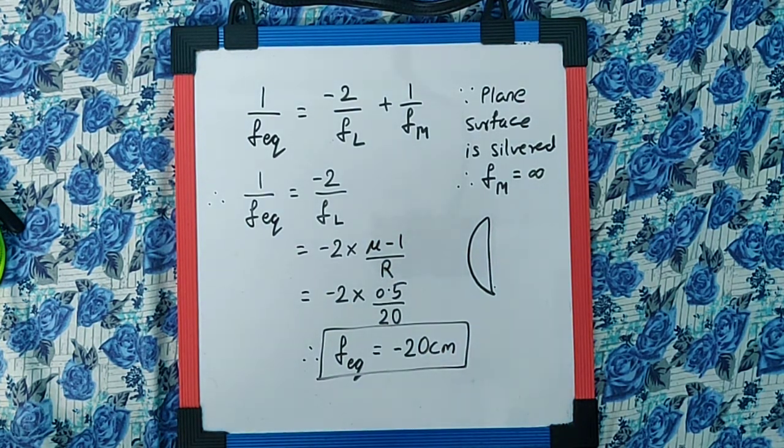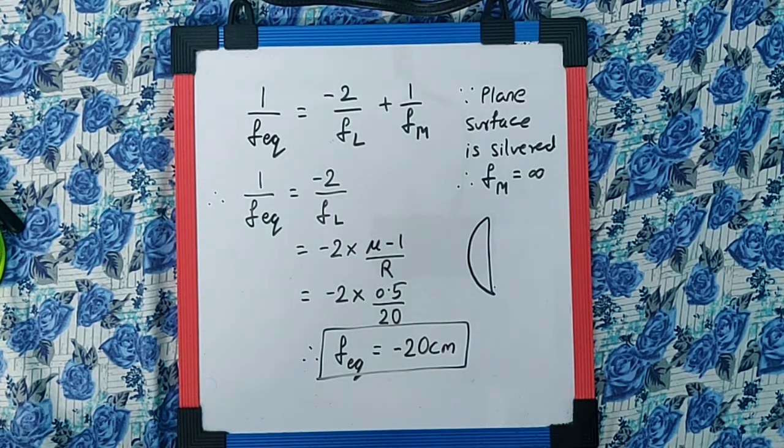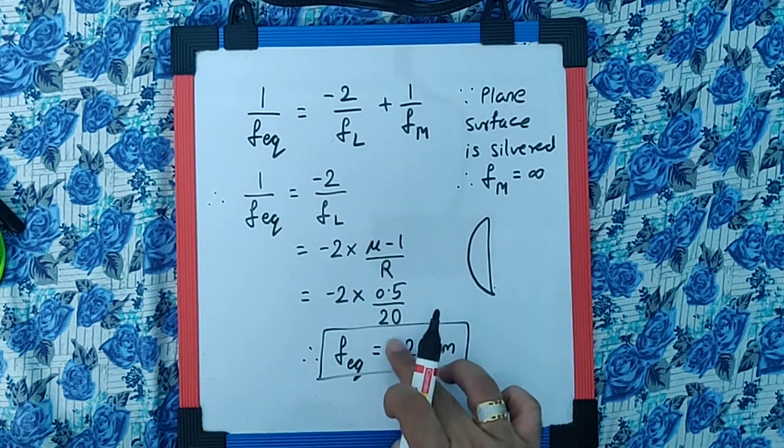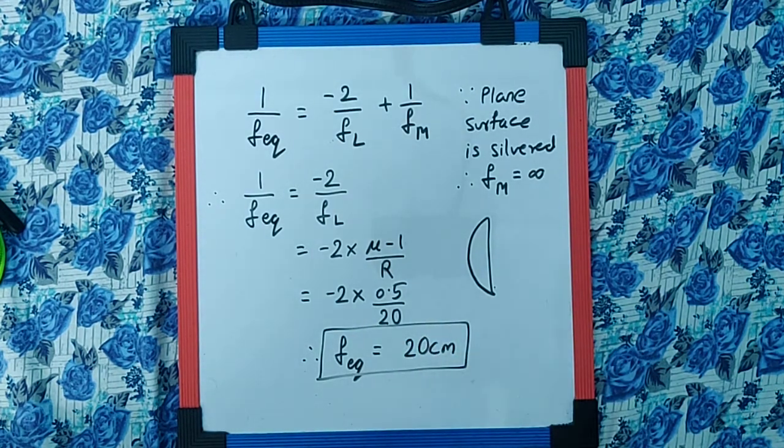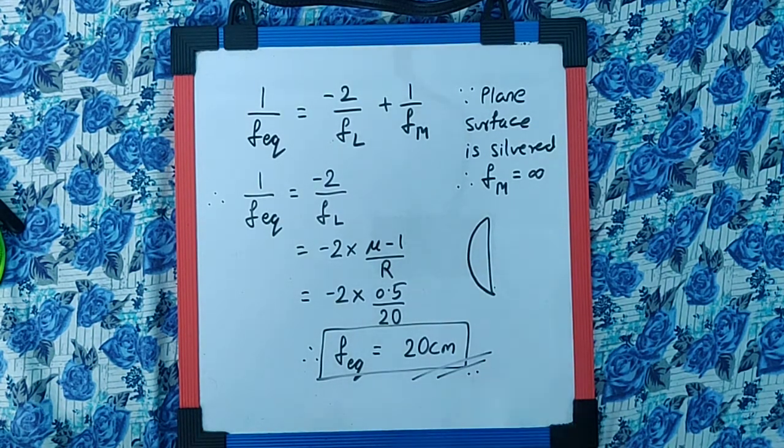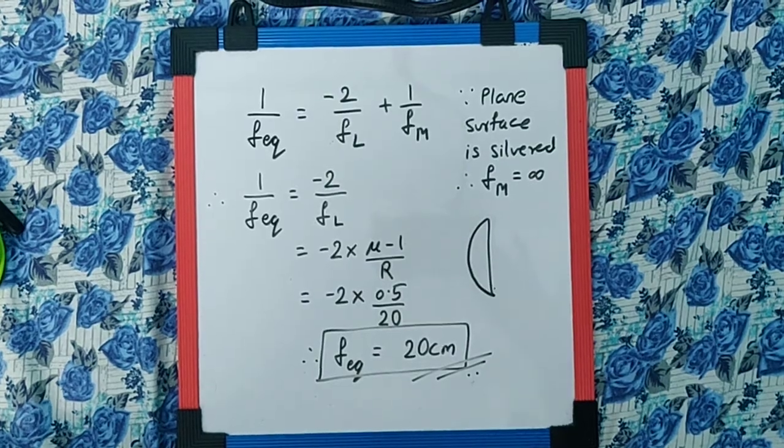Since all the option values are positive, they are actually asking only the magnitude of the focal length and not whether it is a concave or convex type of mirror or a converging or diverging type. So the equivalent focal length of the combination is going to be 20 centimeters, and that is the final answer.